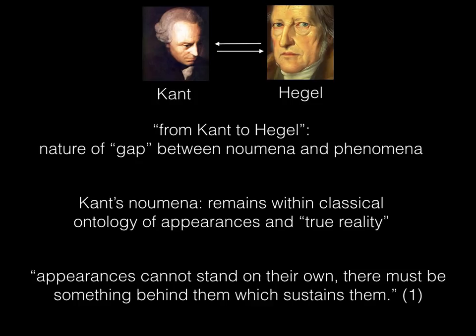According to Zizek, where Kant was too conservative towards the end of his career to really accept the truth of his discovery, the later German idealists, culminating with Hegel, were capable of unpacking the consequences of the Kantian break. As Zizek states in the opening of the subsection Phenomena, Noumena, and the Limit: "Kant made a breakthrough the radicality of which he was himself unaware."